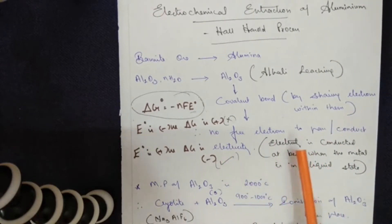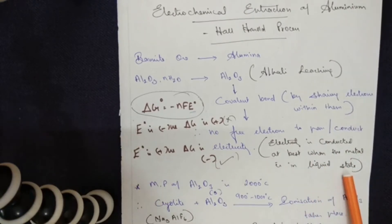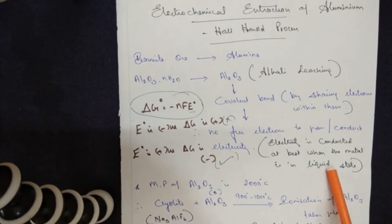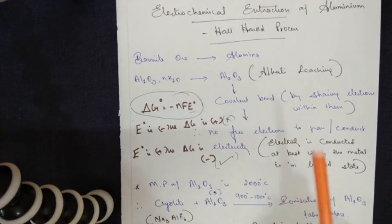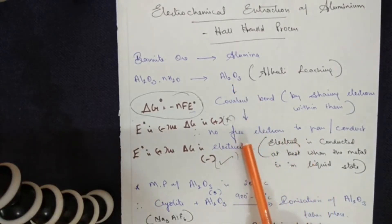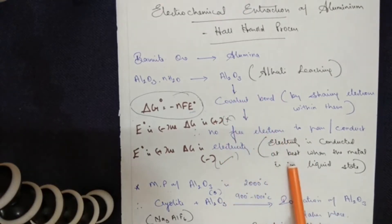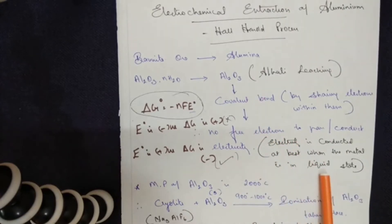There are two criteria for conducting electricity. First, the metal should be in the liquid state. Second, it should have free electrons. In terms of alumina, free electrons are not available because a covalent bond is formed within it. Additionally, alumina is in the solid state, not in the liquid state.